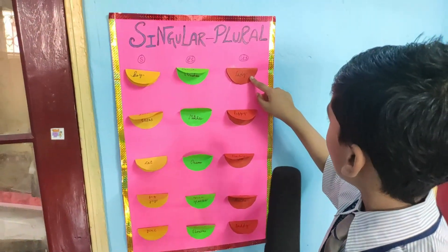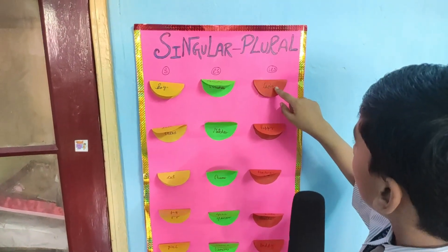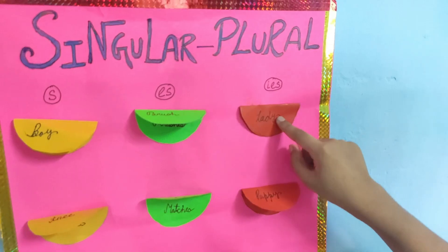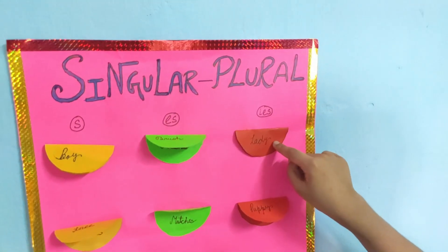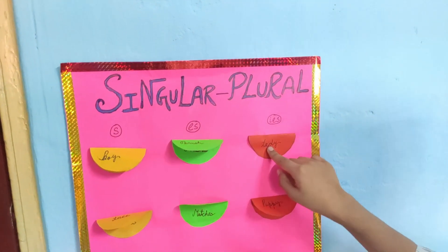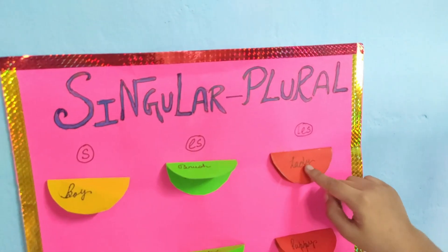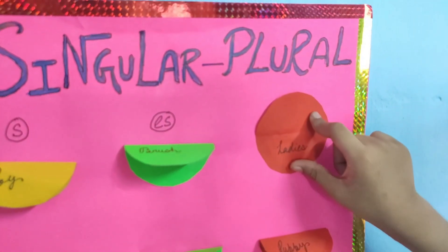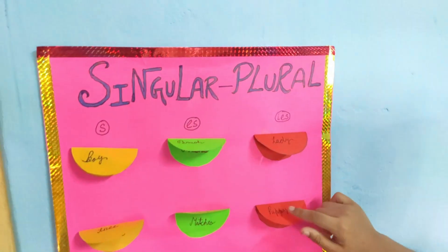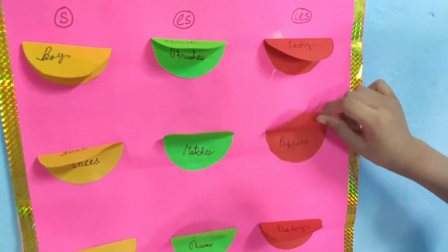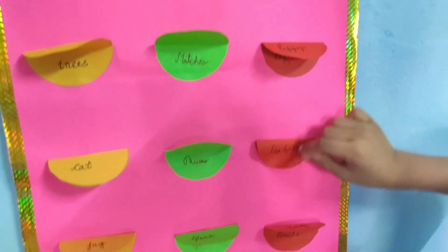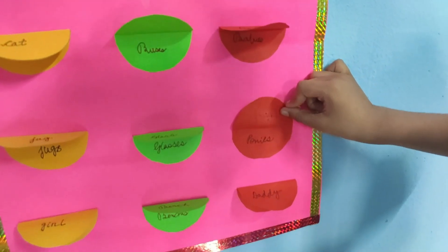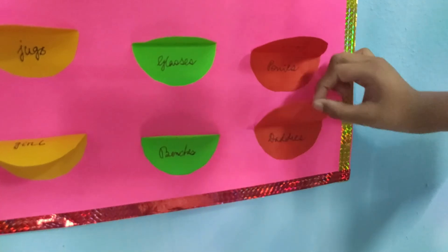In the third column, we have to remove the Y and add IES. For example, it is lady, so we have to remove the Y and in plural form it will be ladies. Puppy → puppies, baby → babies, pony → ponies, daddy → daddies.